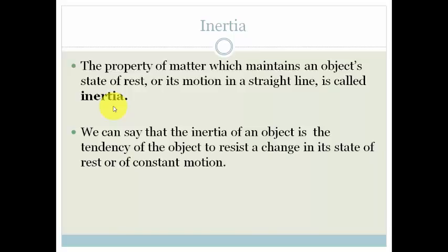We can say that inertia of an object is the tendency of the object to resist a change in its state of rest or of constant motion. In other words, the object basically resists any type of change. Either if it stays stationary, it stays stationary. And if it's going at a constant velocity, it wants to carry on going at a constant velocity.